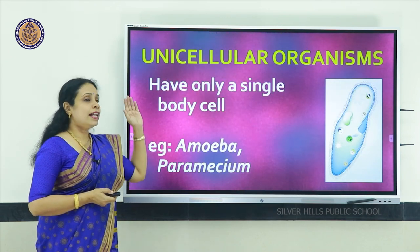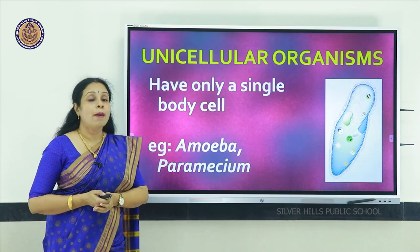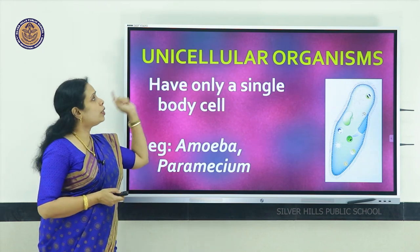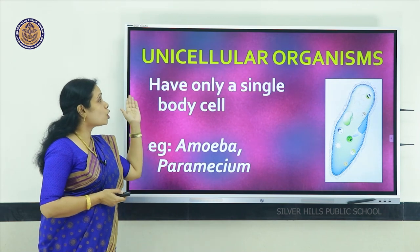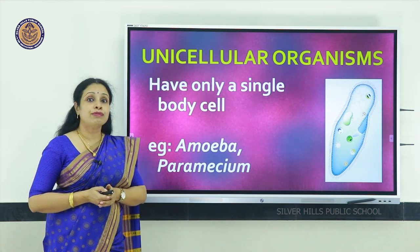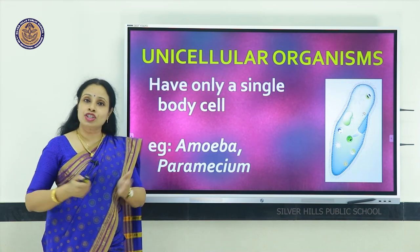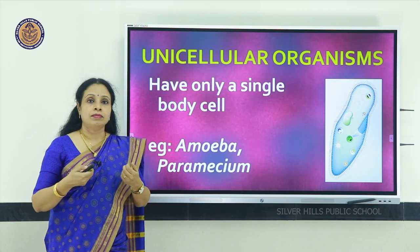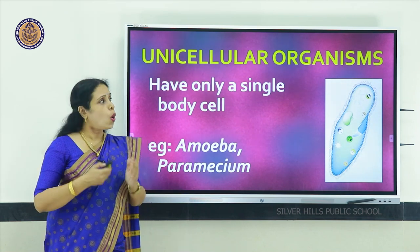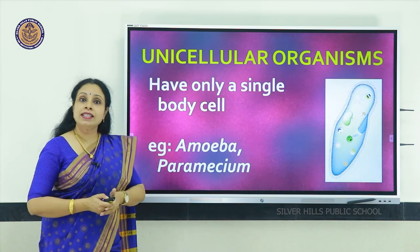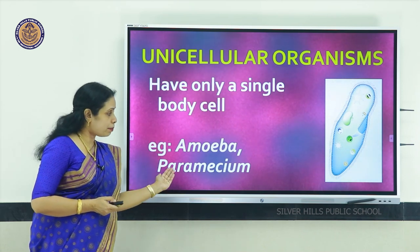Let's compare unicellular organisms with multicellular ones. Unicellular — 'uni' means one — so such organisms have only a single cell for their body, and that single cell does all the functions like respiration, taking in food, excretion, and reproduction. Examples of such organisms are amoeba and paramecium.